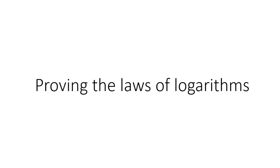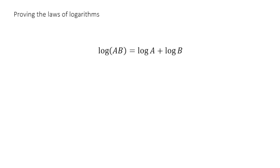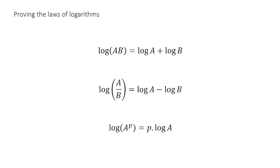We've got three that we're looking at in particular. First, that the log of a times b is equal to log a plus log b. Second, that the log of a divided by b is log a minus log b. And third, that the log of a to the power of p is equal to p times by log a. Those are the three laws.